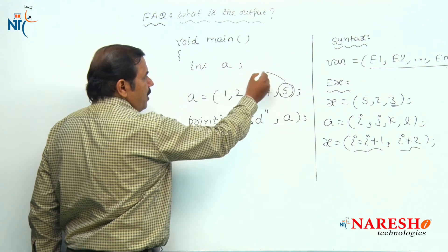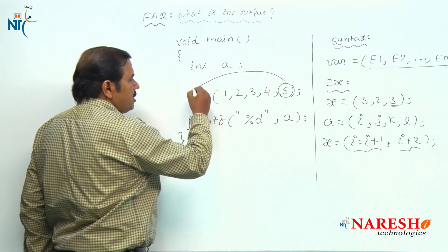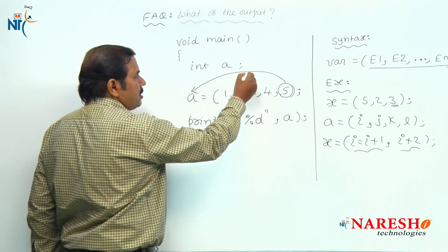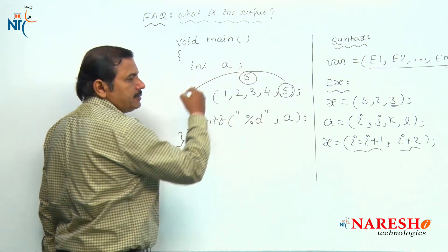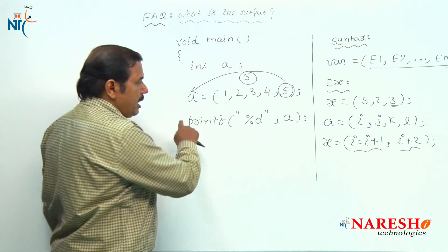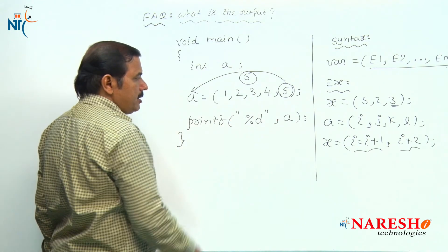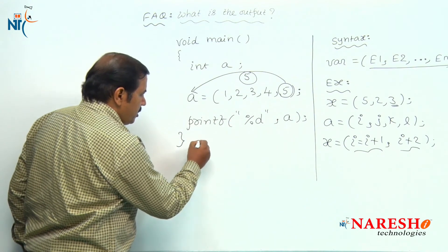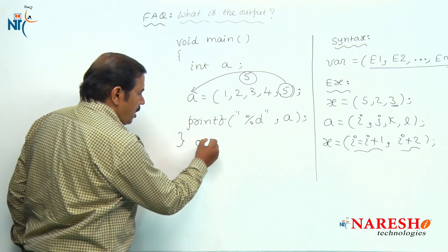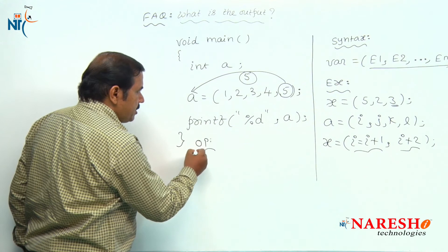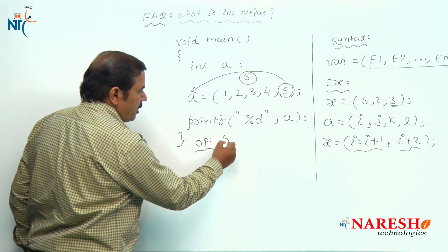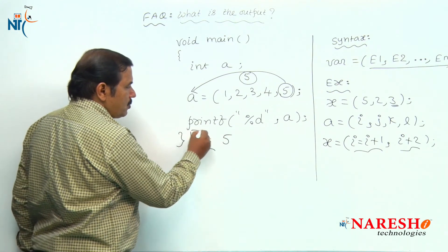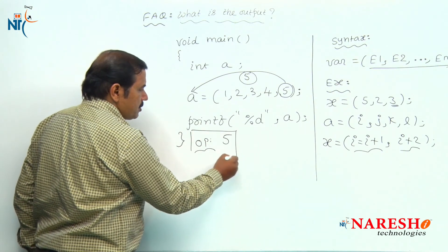This value 5 is assigned to variable a, and then we print the value of a. The output on the screen is 5. This is the output of this code.